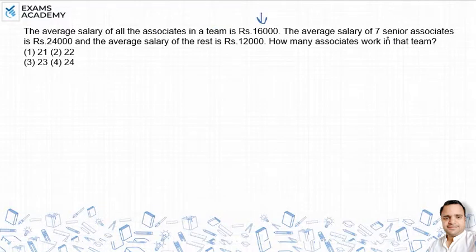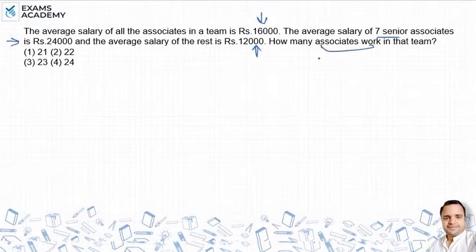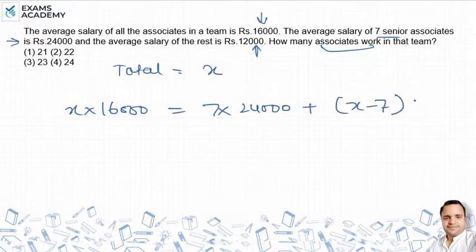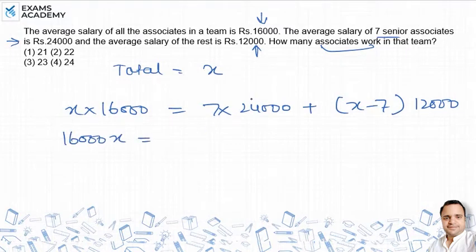The average salary of all associates is 16,000. Setting up the equation: 7 senior associates at 24,000 and (x minus 7) other associates at 12,000, divided by total x equals 16,000. So: 7 × 24,000 plus (x − 7) × 12,000 divided by x equals 16,000.